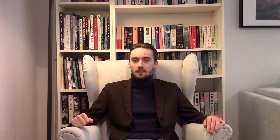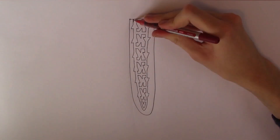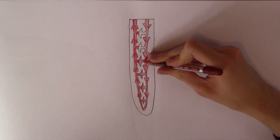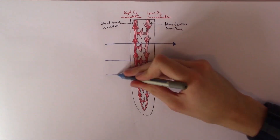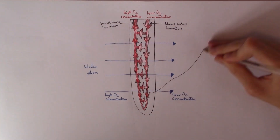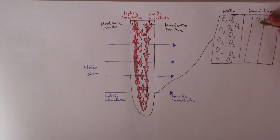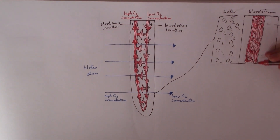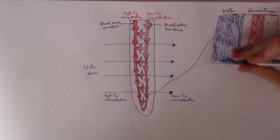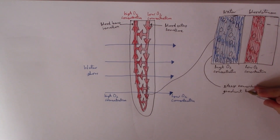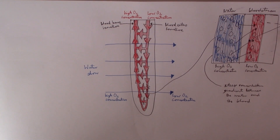Oxygen diffuses from the water into the fish's bloodstream using the lamellae in a system known as the counter-current system. In the counter-current system, blood flows through the lamellae in one direction, and water flows over them in the opposite direction. This means that water with a high oxygen concentration flows next to blood with a lower oxygen concentration, creating a steep concentration gradient between the water and the blood, meaning that large amounts of oxygen diffuse into the blood.